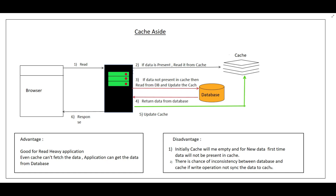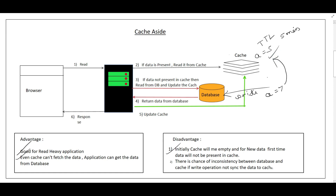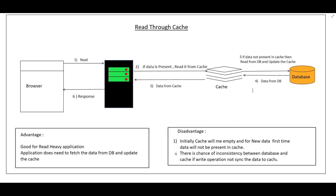The advantages of Cache Aside: it is good for read-heavy applications. If the application cannot fetch the data from the cache, it can still fetch from the database. The disadvantages: initially, if a user requests new data, it will not be present in the cache. Also, if a write happens directly to the DB and data is present in the cache — say a equals 5 with a TTL of 5 minutes — and the database updates a to 7, until the TTL expires the new data will not be updated in the cache, causing a data consistency problem.